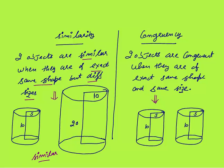Whereas, two objects are congruent when they are of exact same shape as well as the same size — in every dimension, they are the same. You can see that these two cylinders are congruent, as they have the exact same shape and size, equal in every dimension.